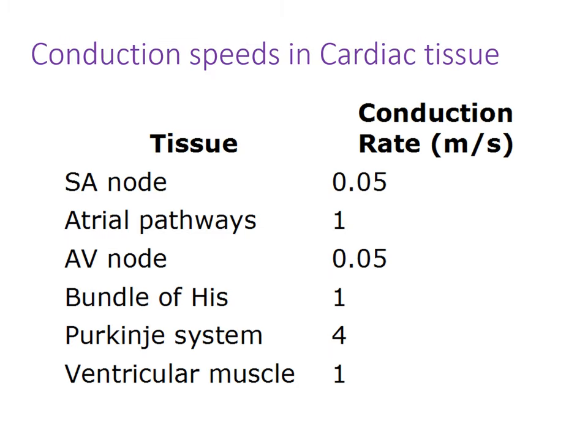The conduction speeds of different tissues in the conduction system are: the SA node at 0.05 meters per second, the atrial pathways at 1 meter per second, the AV node at 0.05 meters per second, the bundle of His and ventricular muscles at 1 meter per second, and the Purkinje system — the fastest — at 4 meters per second.